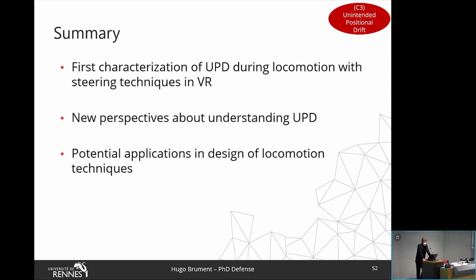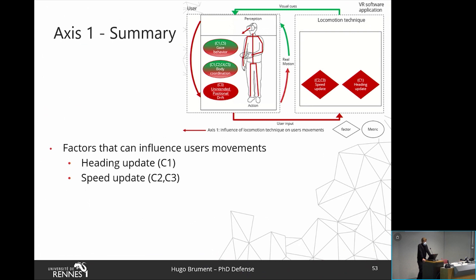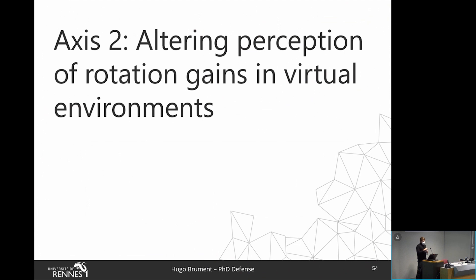To summarize, we made a first characterization of UPD during locomotion while using steering techniques in VR. Our results provide new perspectives on the understanding of UPD during navigation in VR and new potential applications regarding the design of locomotion techniques where UPD could be taken into account. To summarize the first axis contributions: we showed that factors related to locomotion techniques, such as heading and speed update, can affect users' movement — demonstrated through metrics such as gaze behavior, body coordination, and UPD. We now move to the second research axis: altering the perception of rotation gains in virtual environments.